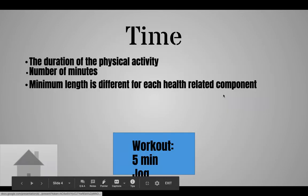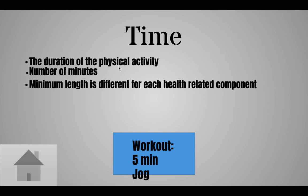The next letter is T for time. Time is just the duration of the physical activity — how long you are doing it. Whether you're working out for 20 minutes or two hours, that's 120 minutes. When you are working out, you are supposed to be active 60 minutes every day. An example workout for time would be a five-minute jog, which is a medium intensity activity you could successfully complete.